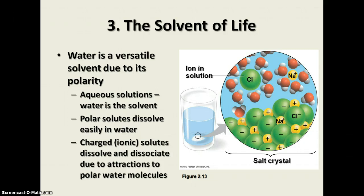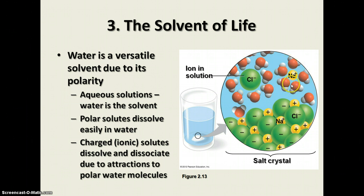When ionic solutes dissolve, they dissociate — the ions separate from each other. You can see in the diagram that chlorine and sodium ions separate and are both surrounded by water molecules, but oriented differently. The positively charged hydrogen parts of the water molecule are oriented toward the negatively charged chloride ion, and the negatively charged oxygen part is arranged toward the positively charged sodium ion. That's what makes salt water a really good conductor of electricity — the charges can travel more easily through that ionic solution.